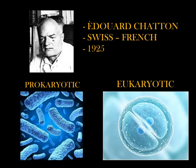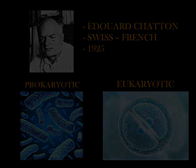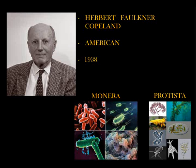In 1925, Édouard Chatton established for the first time the terms prokaryotic and eukaryotic cell. To be simple, prokaryotic cells lack a membrane-bound nucleus, mitochondria, or any other membrane-bound organelle, and eukaryotic cells have this kind of membrane. However, prokaryotic and eukaryotic are not kingdoms but empires, a level above kingdoms. In 1938, the American Herbert Faulkner Copeland grouped unicellular organisms into two kingdoms: Monera and Protista. All unicellular organisms that are prokaryotic cells were put in the kingdom Monera, and the eukaryotic unicellular organisms in the Protista kingdom.